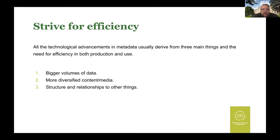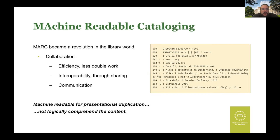Metadata concerns three things: the need for efficiency in both production and use as we handle bigger volumes of data; content and media becoming more diversified and harder to describe; and structural relationships to other things becoming more important. In the 1960s, MARC became a revolution in the library world through collaboration and efficiency — the idea of sharing cataloguing cards — though it was still designed for printing and the electronic databases were still to come.